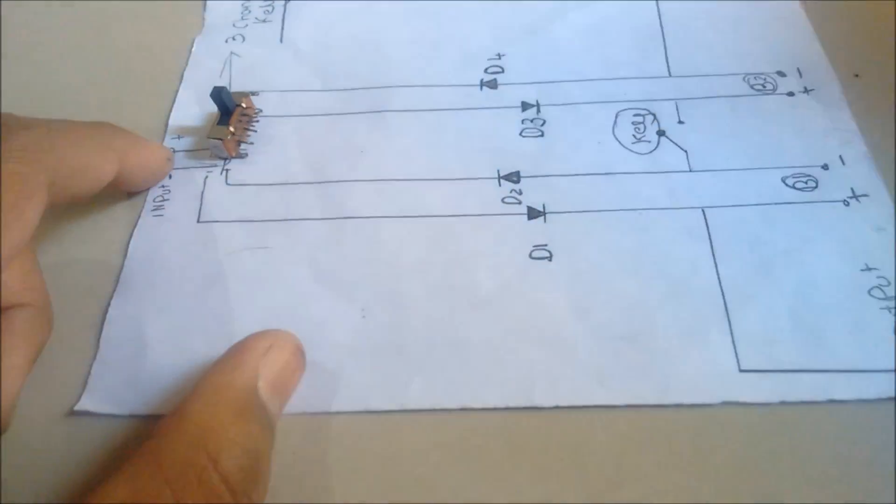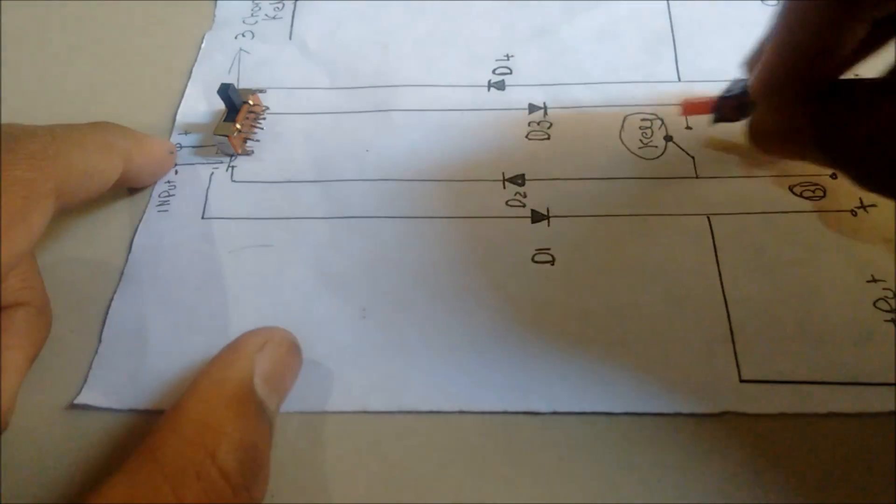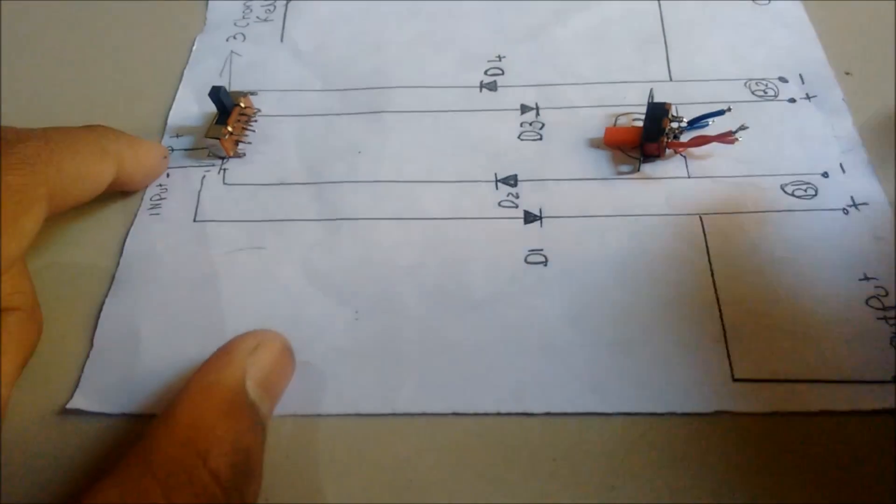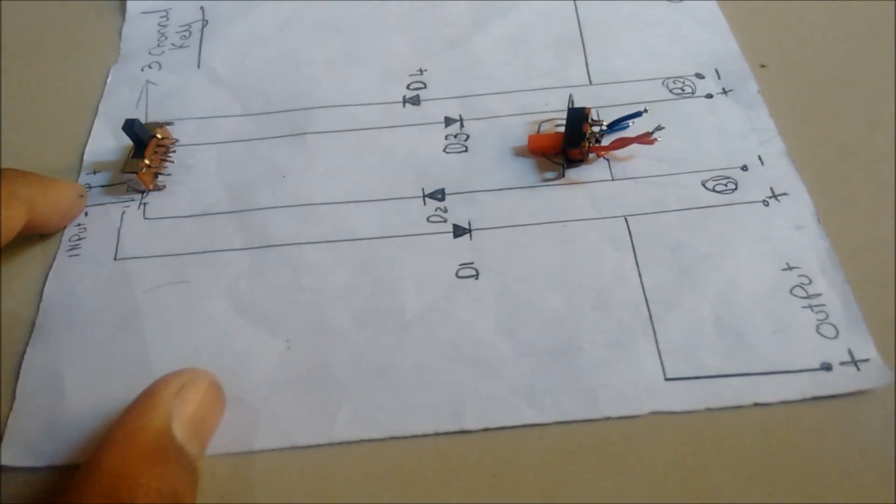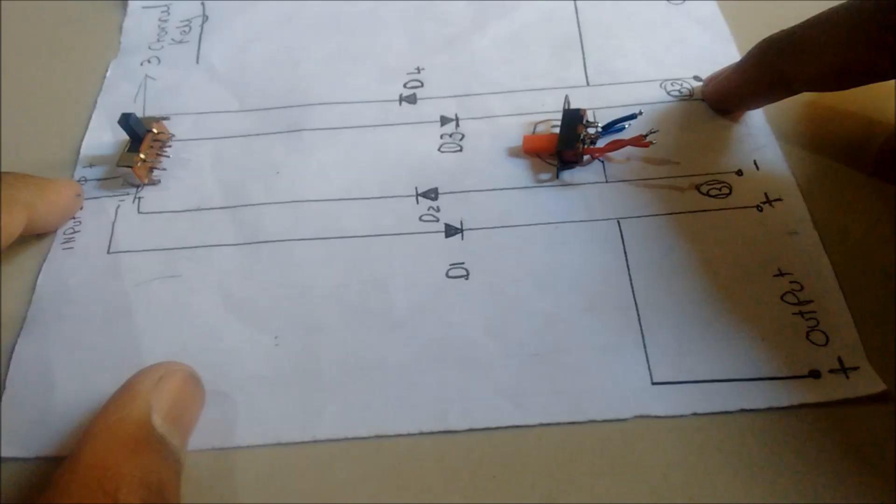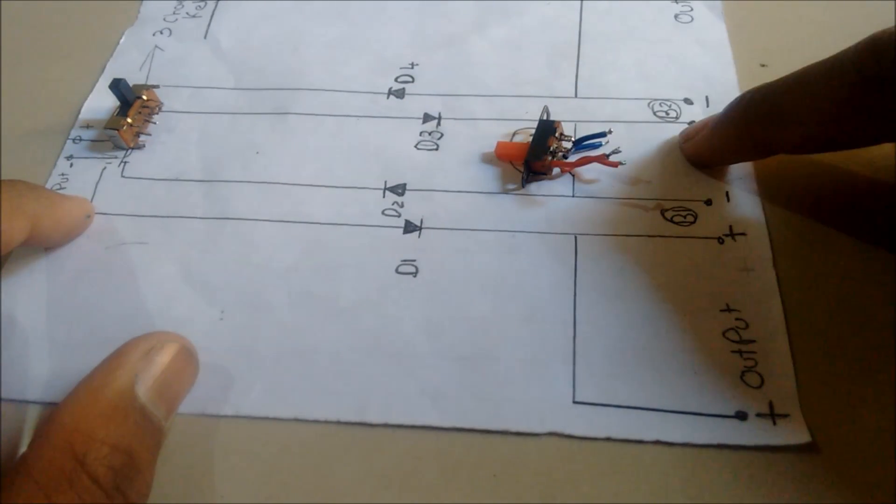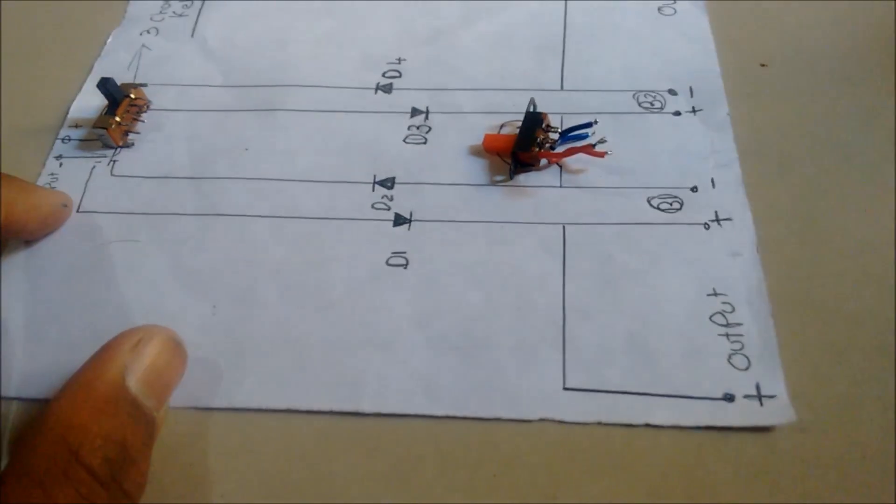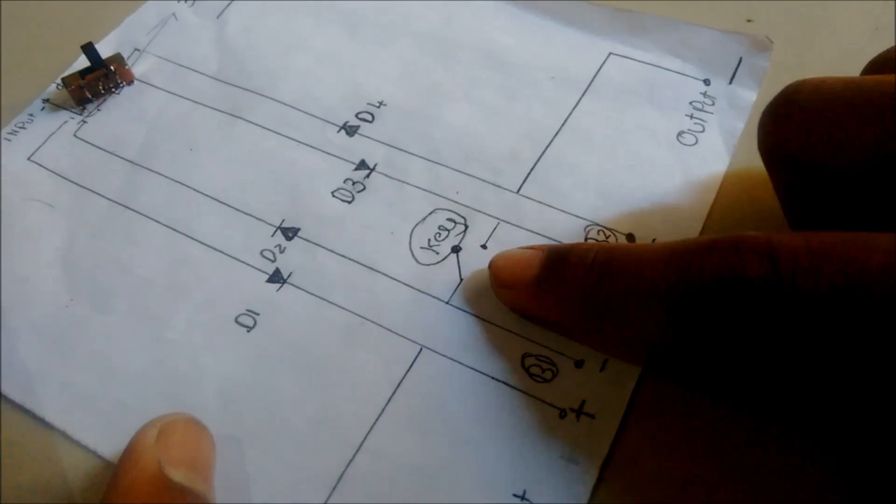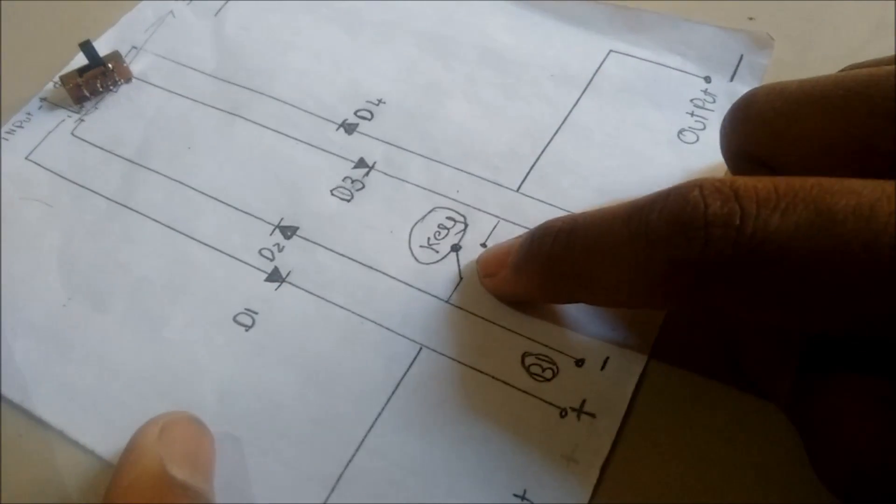Here's the three-channel key, here is the second key, and there are diodes. This is battery one and battery two to charge this circuit and charge our batteries. This key will change parallel to series connection.